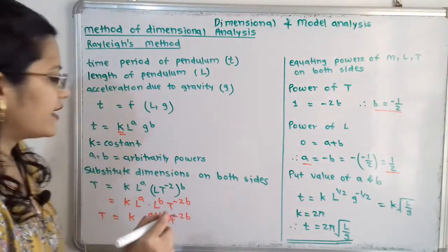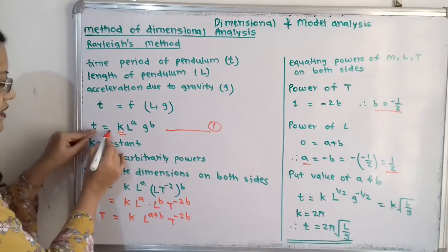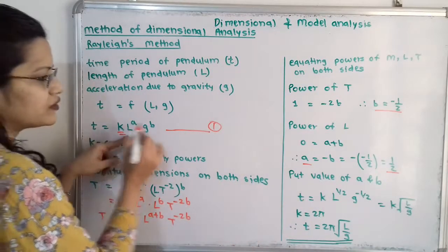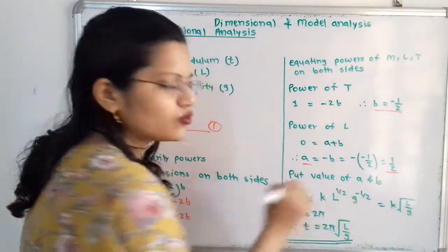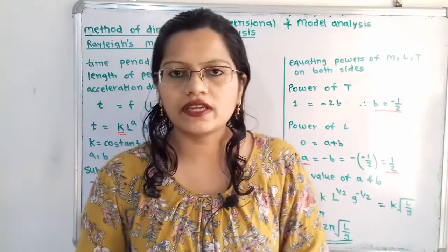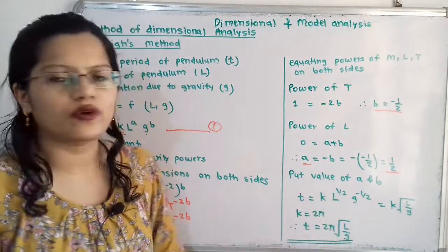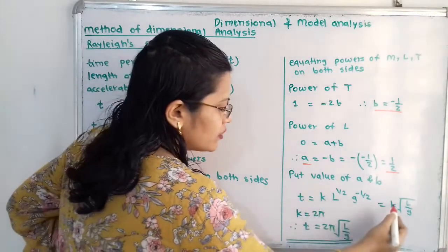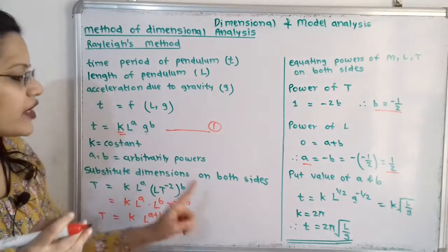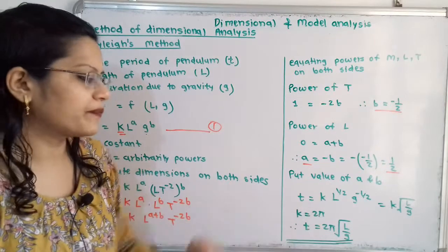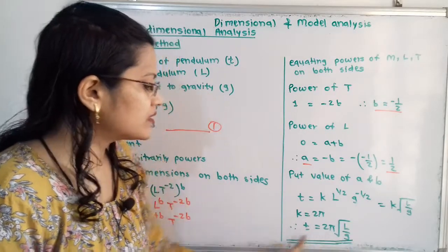Now we put the values of A and B into equation 1: T = K into L raise to half into G raise to minus half. Raise to half means square root, and the negative power of G means it shifts to the denominator. So T = K into the square root of L by G. From experiments on the pendulum, K is found to be 2π. Therefore, the final expression is T = 2π times the square root of L by G.